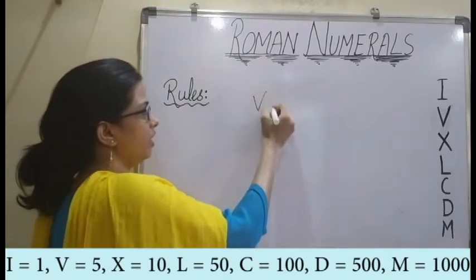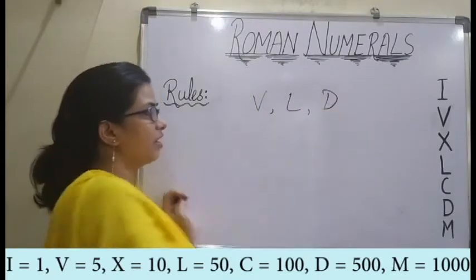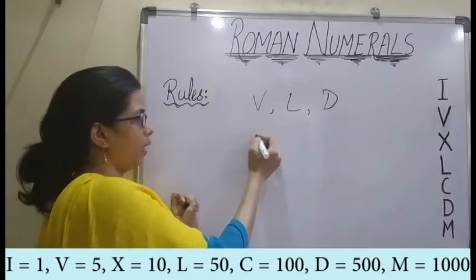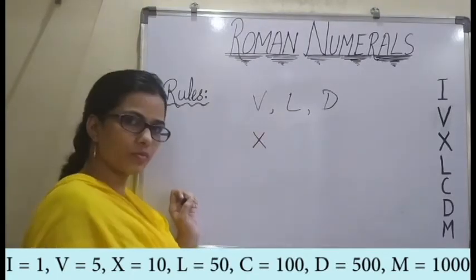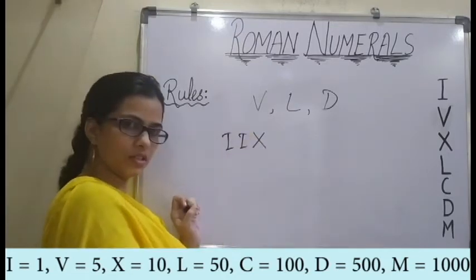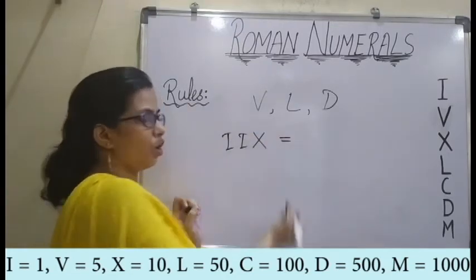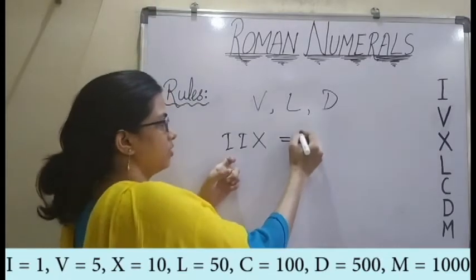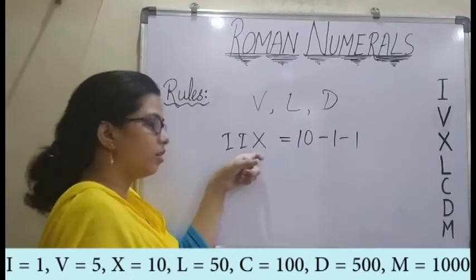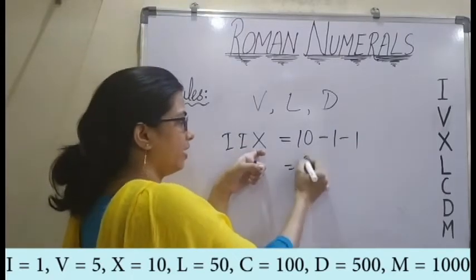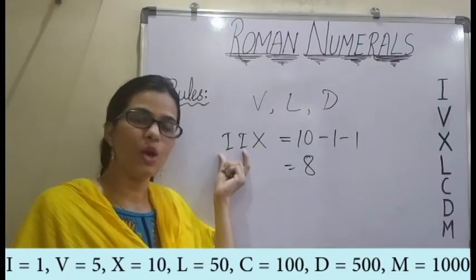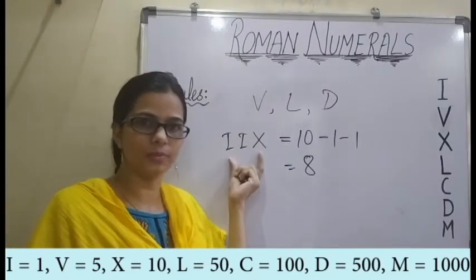Symbols V, L, and D cannot be subtracted from any symbol of a greater value. And suppose I have X, and if I add IIX, according to the previous rule, the value of I is subtracted from the value of X, so we get 8, which is absolutely wrong. So we cannot subtract any symbol more than once from another symbol.